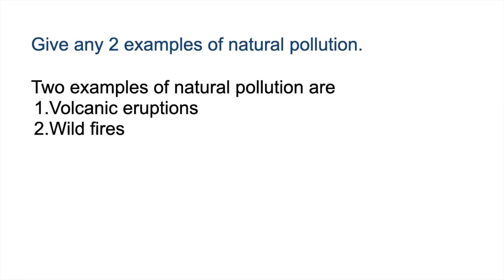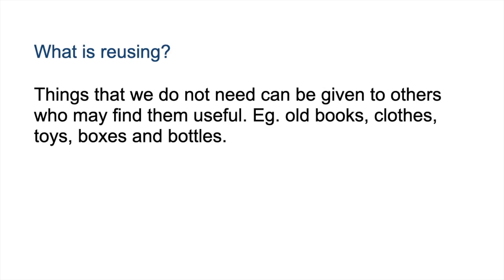Give any two examples of natural pollution. Two examples of natural pollution are volcanic eruptions and wildfires. What is reusing? Things that we do not need can be given to others who may find them useful — for example, old books, clothes, toys, boxes and bottles.